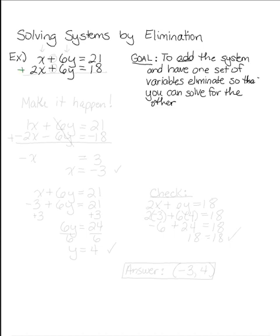In this problem, if we were to add the system as it is, if you look at the x's and the y's, if you were to add straight down, neither set would eliminate or cancel out. So when it doesn't happen on its own, you have to make it happen.